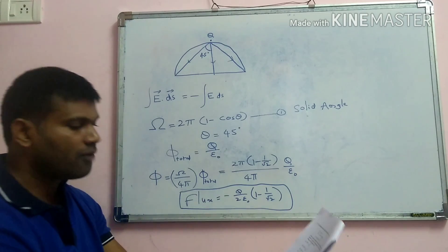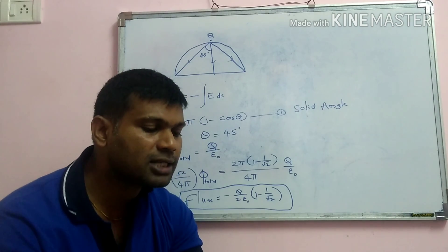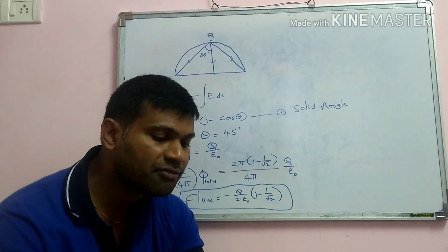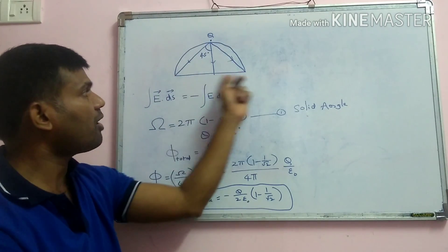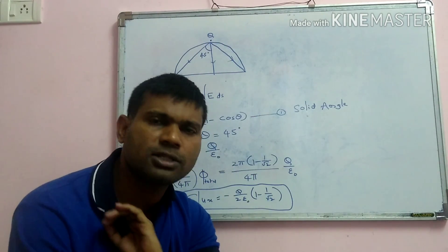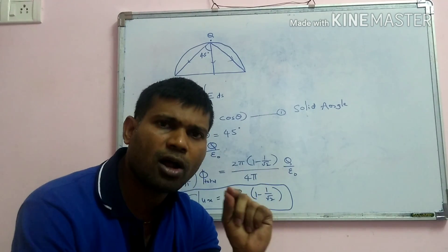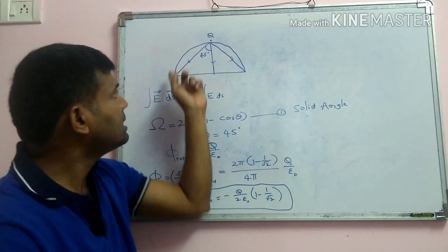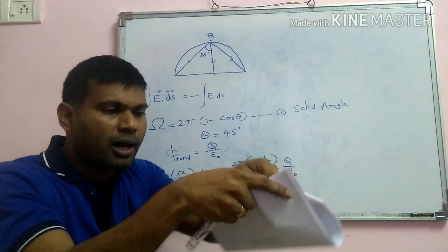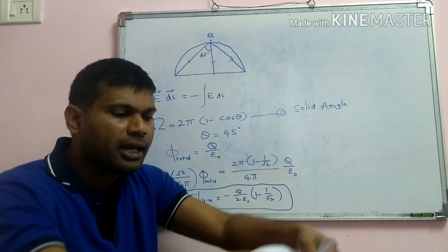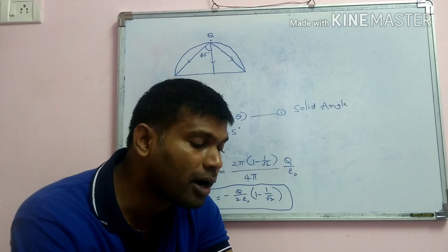Option B says the total flux through the curved surface and flat surface is Q/ε₀. This is obviously wrong, because Q/ε₀ is only valid if the surface completely encloses the charge. Since the charge is outside, option B is wrong.